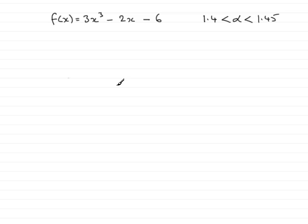Now to answer this question, what we're going to do is look at what we call the change in sign method. We start off by putting 1.4 in for the value of x into here. In other words we work out f of 1.4.